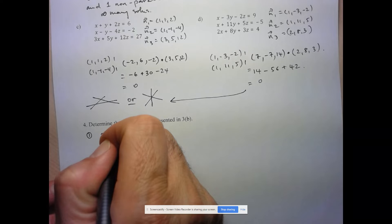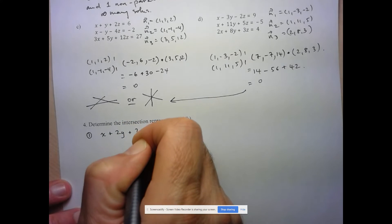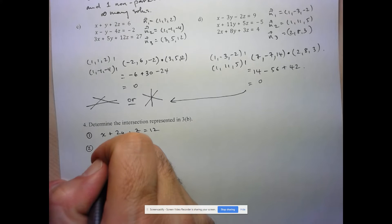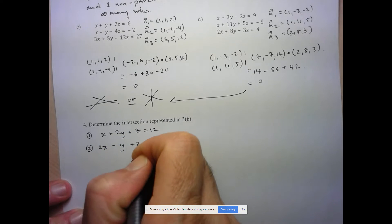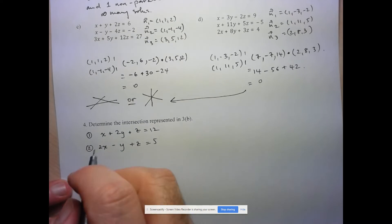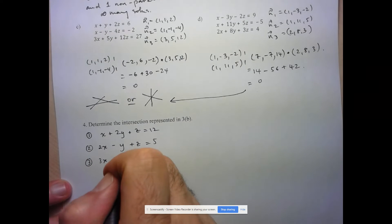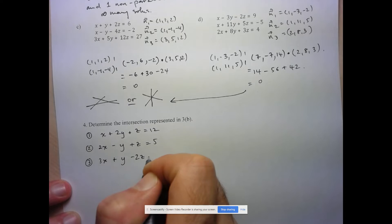So here we have equation 1 is x plus 2y plus z equals 12. Equation 2 is 2x minus y plus z equals 5. And equation 3 is 3x plus y minus 2z equals 1.